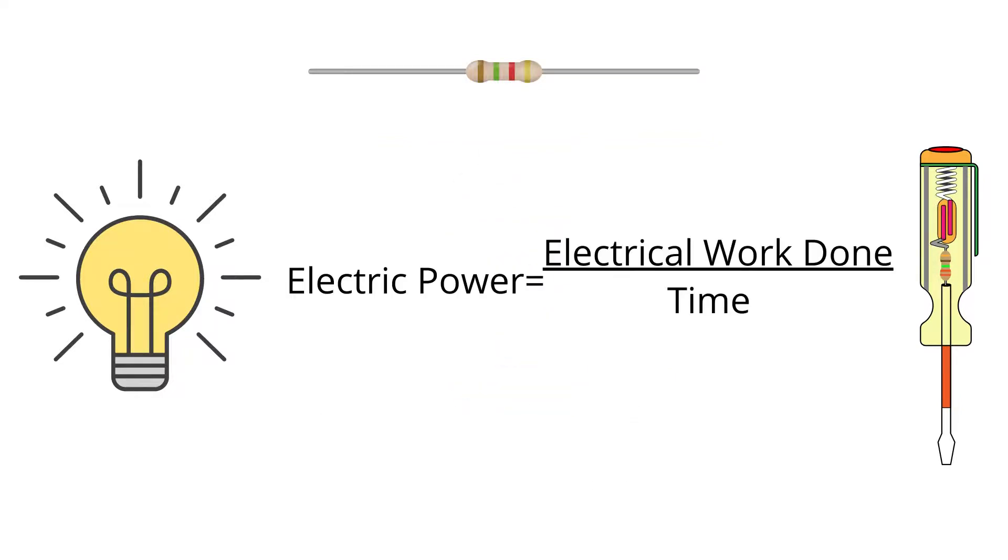Electrical power is defined as electrical work done per unit time—that is, electrical work done divided by time taken. If it is represented in terms of energy, then we can write electric power equals electrical energy consumed divided by time taken.